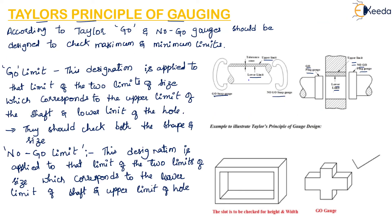Taking an example: in this figure, the go gauge must check the dimension as well as the form — that is, the perpendicularity of the shaft at a time. Hence, the go gauge must be as shown in the figure. This is the go gauge; it has to check both the dimension as well as the perpendicularity of this slot.